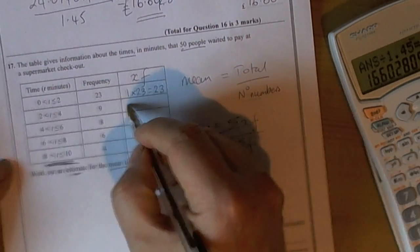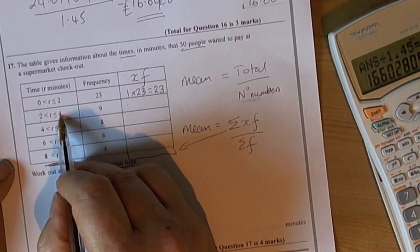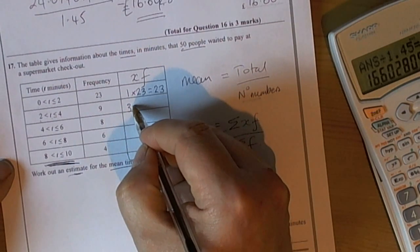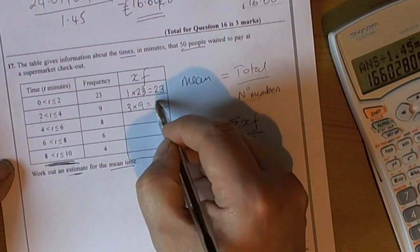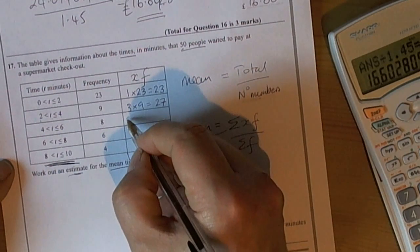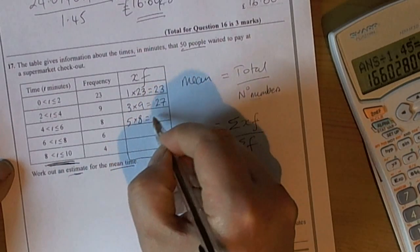These 9 people took between 2 and 4, so our estimate will be 3 for each one (the midpoint). So 3 times 9 equals 27. And again, we're going to estimate that these 8 people took 5 minutes. So 5 times 8 equals 40.